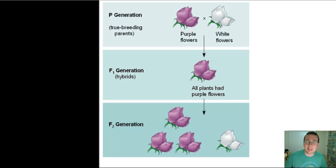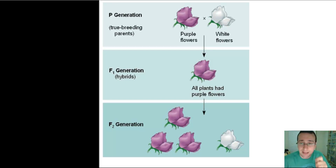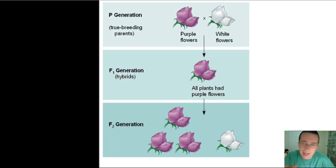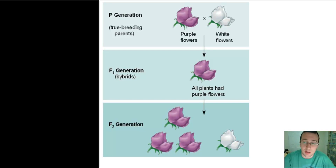But hold on — the recessive look comes back out of nowhere, which teaches him his second lesson: that genes do not blend, but actually segregate and separate, then recombine to form looks that seem to have disappeared, confirming his idea of particle genetics. This F1 cross is the best cross to show the law of segregation, which is tied into the idea of meiosis.